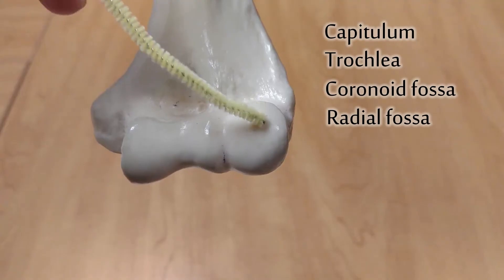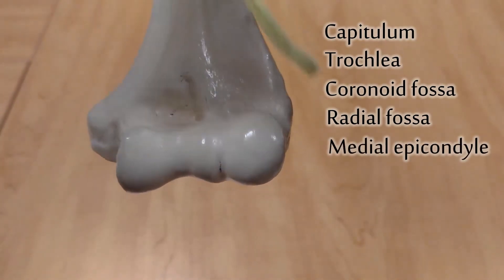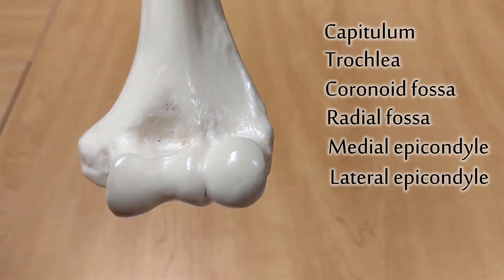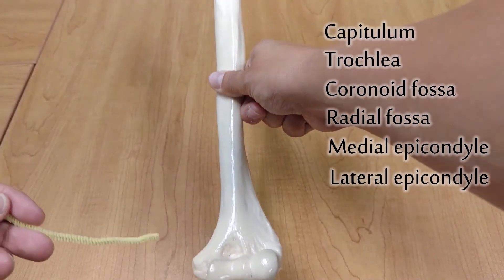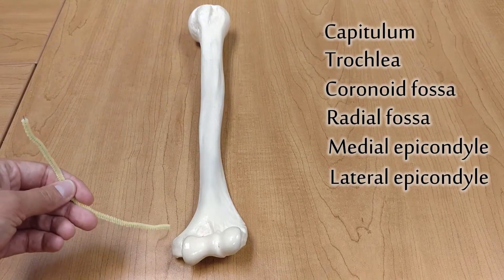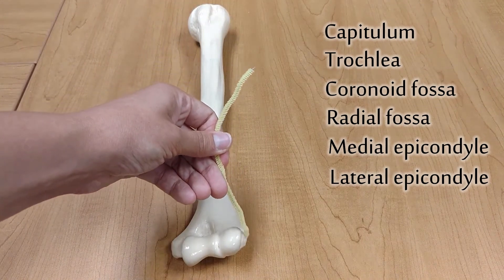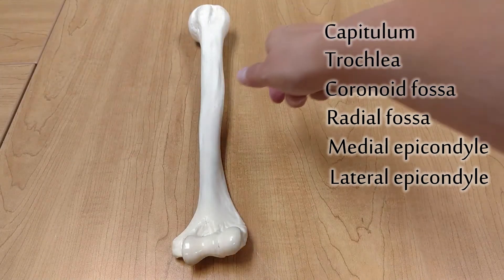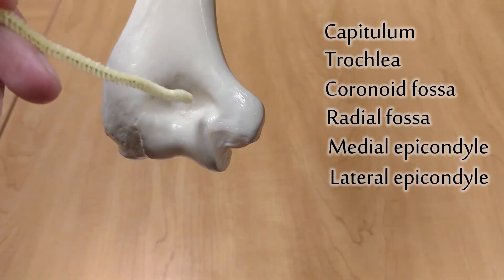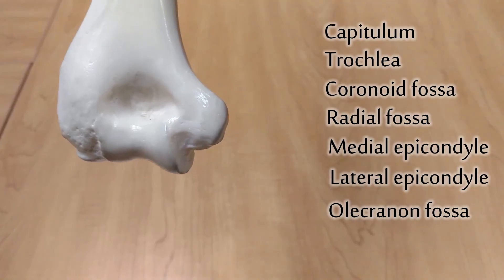Because these are condyles, the bumps next to them are the medial epicondyle and lateral epicondyle. Medial because it's towards the head, and lateral on the other side. Now flipping around to the back, this is the olecranon fossa.